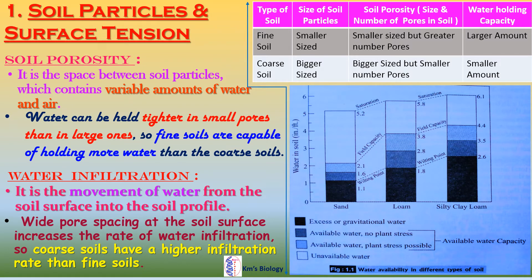Soil porosity is the third important parameter for soil particles and surface tension. It is the space between soil particles which contains variable amounts of water and air. Water can be held tighter in small pores than in large ones, so fine soils are capable of holding more water than coarse soils. Here is a table diagram showing types of soil, size of soil particles, soil porosity, and water holding capacity. Fine soil has a larger amount of water holding capacity, and coarse soil has a smaller amount.